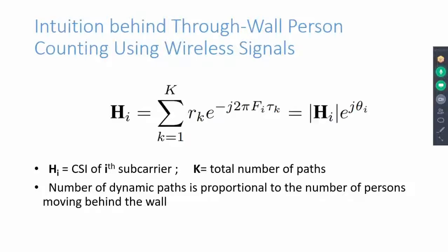We can assume a typical wireless channel in which there are many signal paths. Our intuition behind through-wall counting of moving persons relies on the imagination that as the number of moving targets increases, the number of dynamic signal paths also increases. This is ultimately manifested in the variance of CSI data.